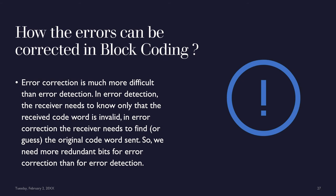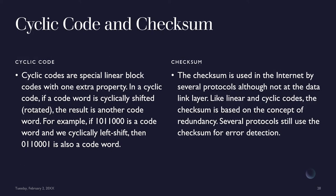Error correction is much more difficult than error detection. In error detection, the receiver only needs to know that the received code word is invalid. In error correction, the receiver needs to find the original code word sent, so more redundant bits are required. Cyclic codes are special linear block codes with one extra property. The checksum is used across the internet by several protocols — though not at the data link layer. Like linear and cyclic codes, the checksum is based on the concept of redundancy, and several protocols still use it for error detection.